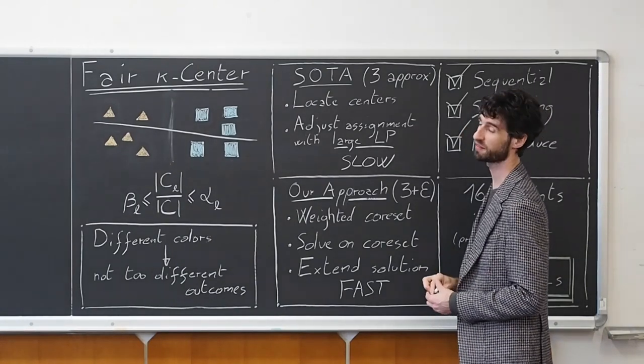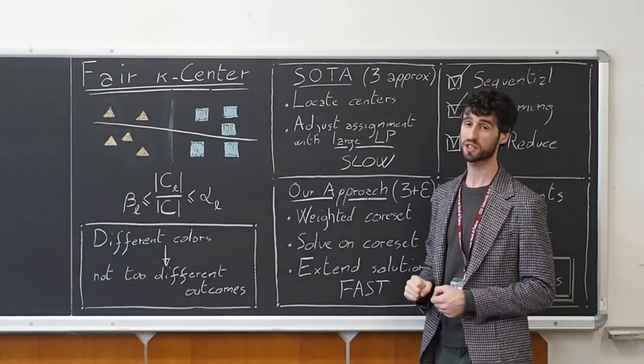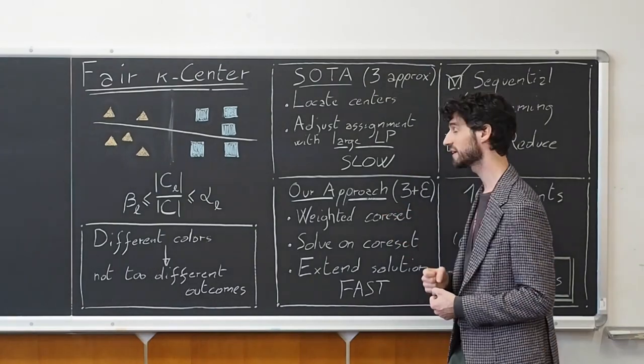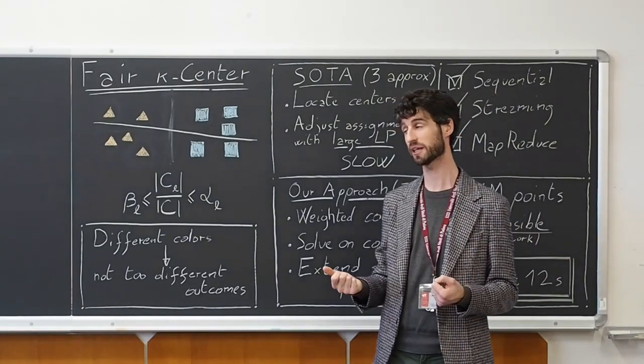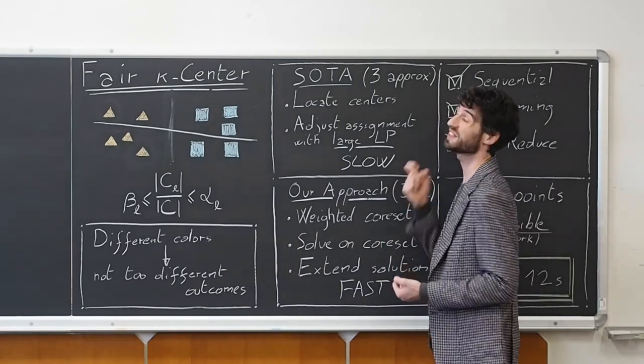State-of-the-art approaches for this problem give a 3-approximation, and what follows is: First, they locate centers by using an unfair clustering algorithm, and then they adjust the assignment by using a large linear program. And this is rather slow.